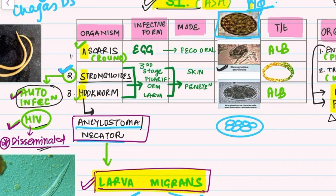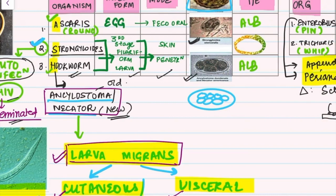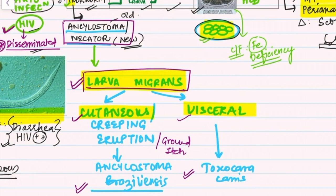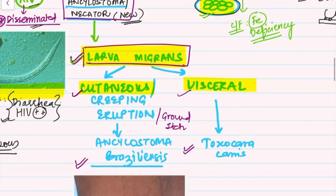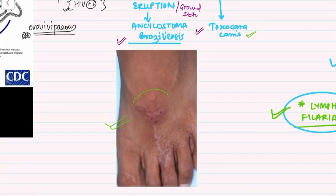For hookworm, there are two types: Ancylostoma duodenale (Old World hookworm) and Necator americanus (New World hookworm). The mode and infective form are the same as Strongyloides. The egg of Ancylostoma has several subdivisions called blastomeres. Clinically, whenever you have iron deficiency anemia with a parasite, think hookworm. Also remember larva migrans: cutaneous (creeping eruption) is caused by Ancylostoma braziliense, and visceral larva migrans is caused by Toxocara canis.